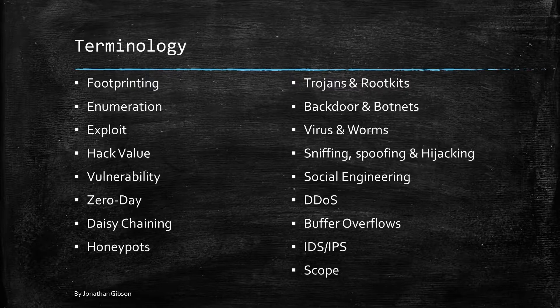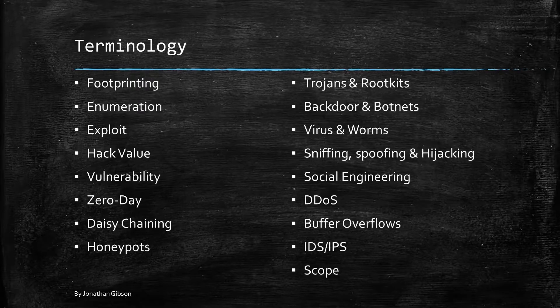A vulnerability is a weakness in design or an implementation error that can lead to an unexpected or undesirable event, compromising the security of a system or a network. A zero-day attack is an exploit to a vulnerability not yet known to both the consumer and the developer until it's used.